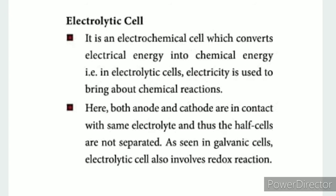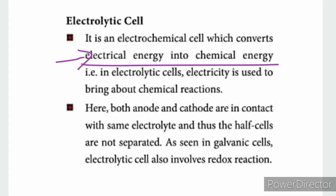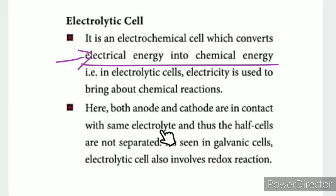Now we have two types of cells: the galvanic cell and the electrolytic cell. The galvanic cell produces current from a chemical reaction. In the electrolytic cell, electrical energy is converted to chemical energy. In electrolytic cells, electricity is used to bring about chemical reactions. Both the anode and cathode are in contact with the same electrolyte, so the half-cells are not separated as in the galvanic cell.